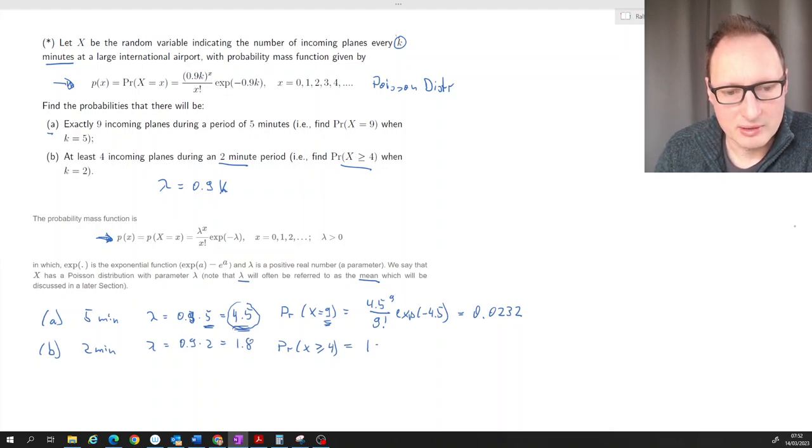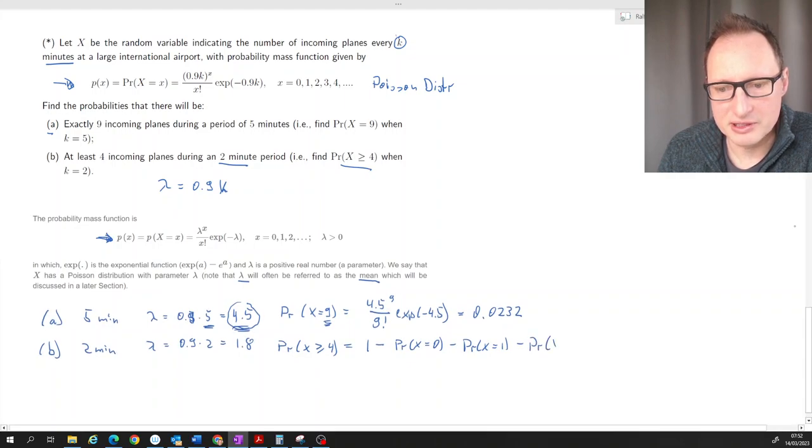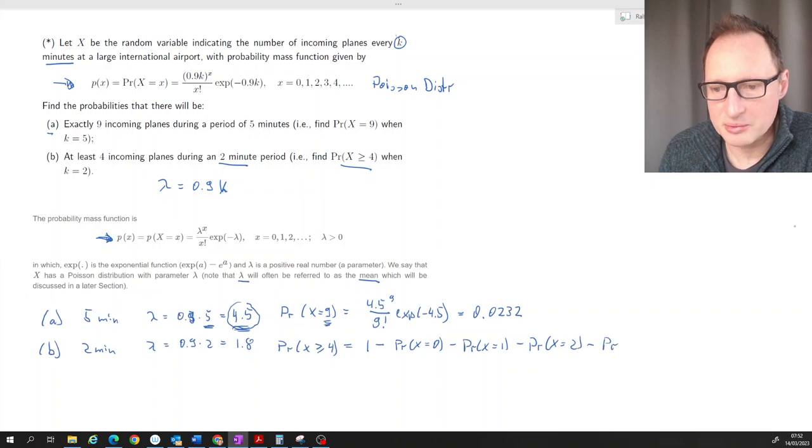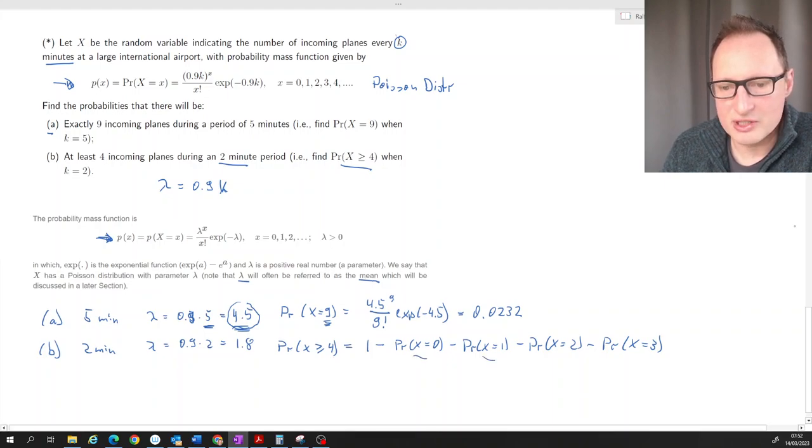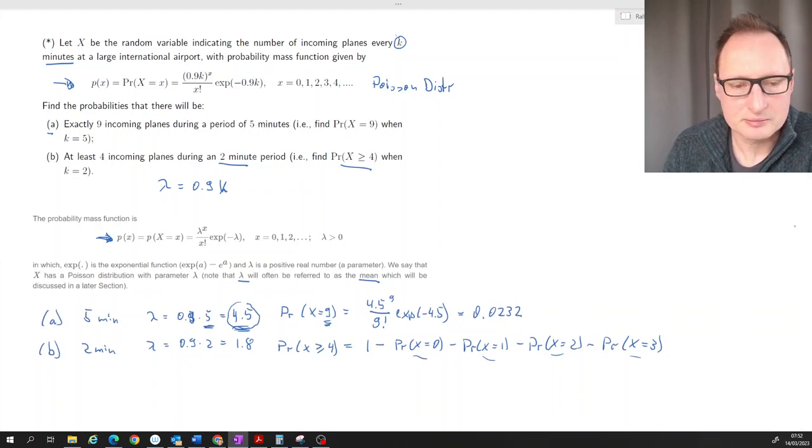So it's 1 minus the probability of x is equal to 0 minus the probability that x is equal to 1 minus the probability that x is equal to 2 and minus the probability that x is equal to 3. So that means you need to calculate four of these probabilities and then subtract them from 1.